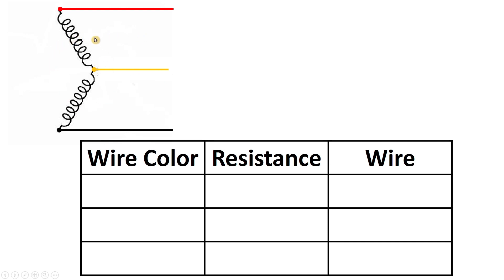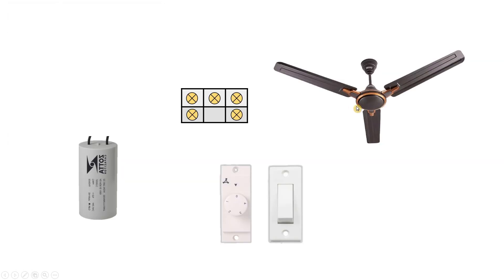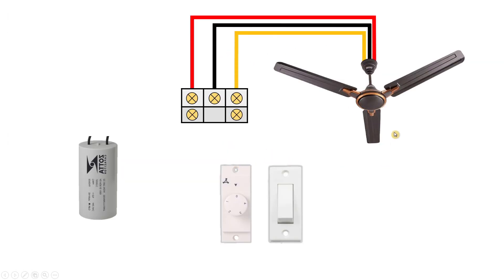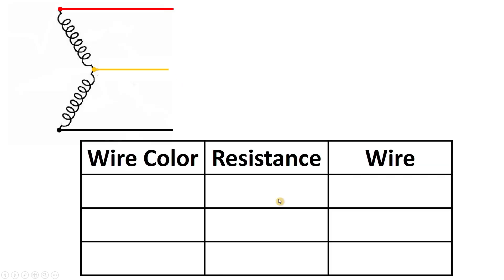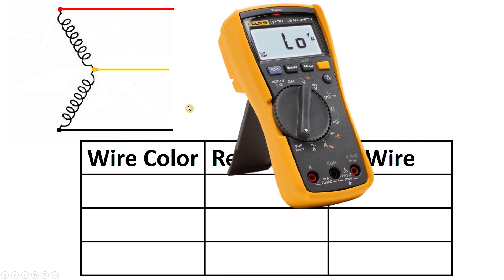By looking at the diagram you can easily say which one is the common wire, but when looking at the actual wires coming out of the ceiling fan you cannot identify which one is the common wire. So if you want to identify the wires, you need to measure resistance. You can do identification through a test lamp, but I suggest measuring resistance through a multimeter.